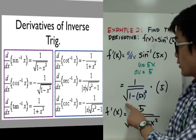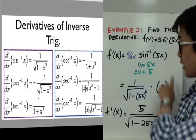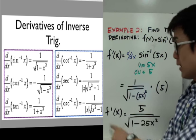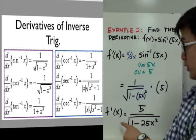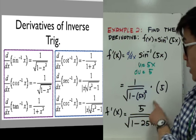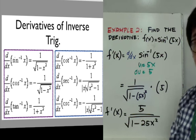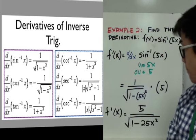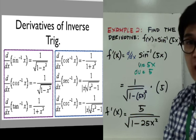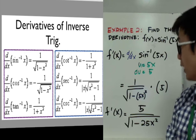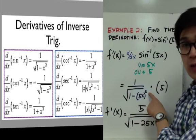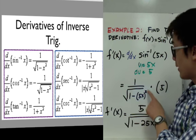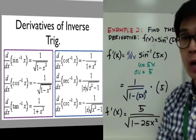If you want to further simplify the derivative, it becomes f prime of x equal to 5 all over the square root of 1 minus 25x squared, because we simplified the exponent in the denominator by substituting 5x for u and squaring it.